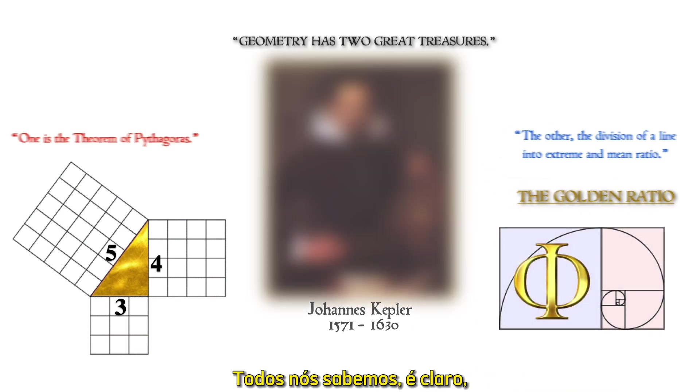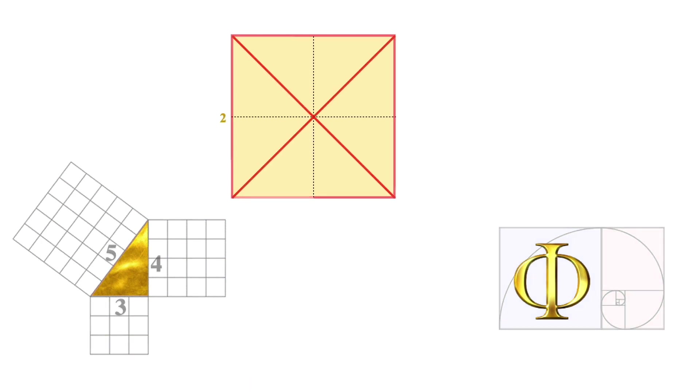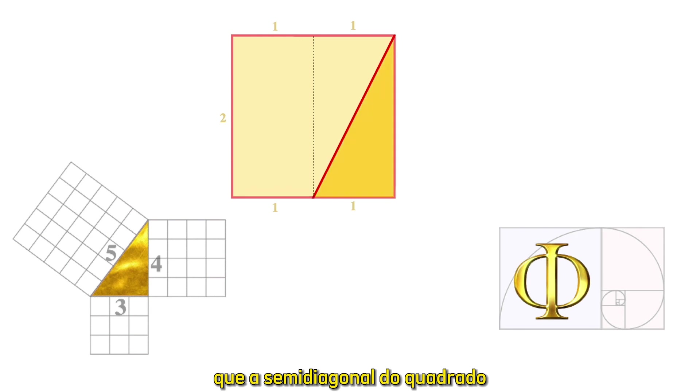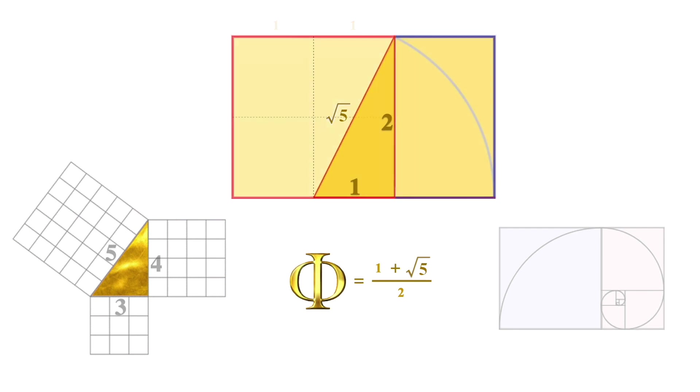We all know that the diagonals of a square reveal its center. It's also well known that the half diagonal of the square gives us a triangle with the side ratios 1, 2, root 5, which produces the golden rectangle and thereby the very definition of phi, the golden ratio. It's simply the length divided by the height of the rectangle.